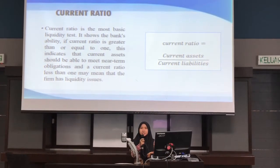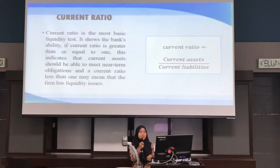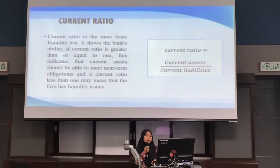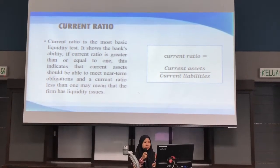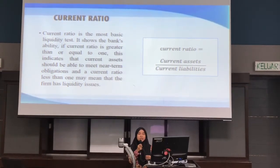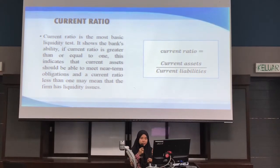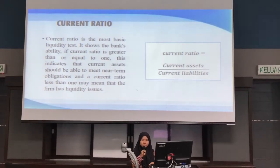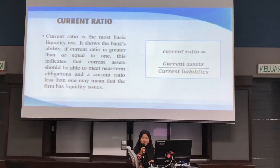Assalamualaikum warahmatullahi wabarakatuh. My name is Nur Asma binti Ahmad Said, metric number 240967. I will proceed to the current ratio of CIMB Islamic Bank. The current ratio is the most basic liquidity test. A current ratio greater than or equal to 1 indicates that the bank should be able to meet its near-term obligations and current liabilities, while a ratio less than 1 may indicate liquidity issues. The formula is current assets divided by current liabilities. Current assets are cash and other assets expected to be converted to cash within one year, while current liabilities are amounts due to creditors within 12 months.